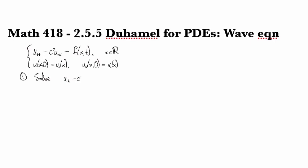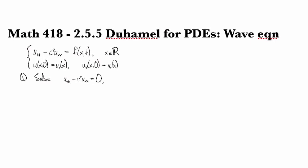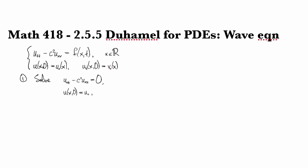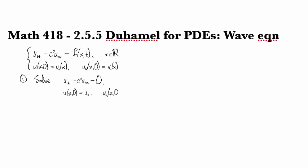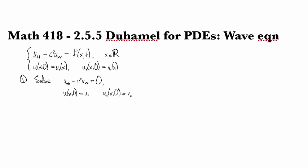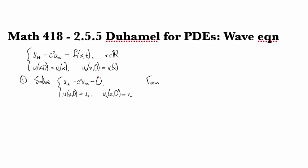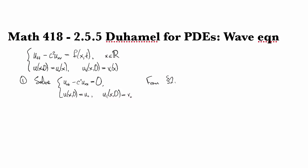So Utt minus C squared Uxx equals 0. So we're homogeneous. And we're going to look at U(x,0) equals U0 and U prime, so to speak, (x,0) is V0. And so we solved this one in section 2.2.